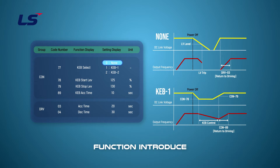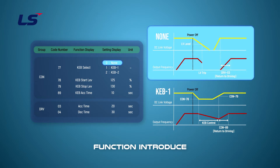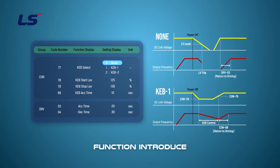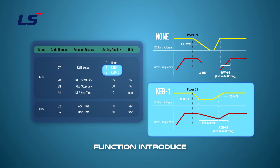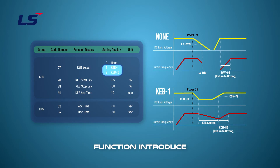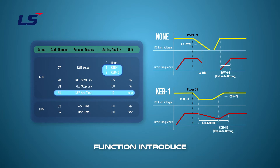When KEB does not operate, it operates as shown in the figure, and when returning to operation, the acceleration time of DRV Group 3 is applied. When KEB control operates, it operates as shown in the figure, and the operating frequency acceleration time when returning to normal operation uses CON Group 89 KEB acceleration time.